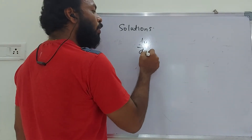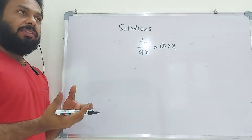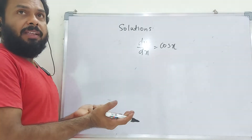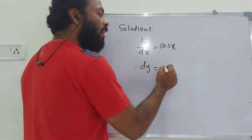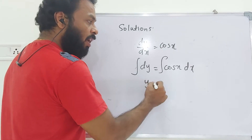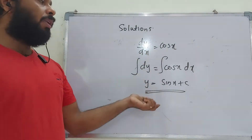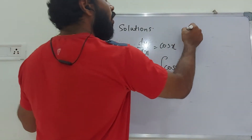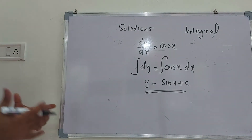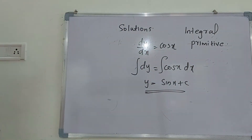Note that differentiation and integration are inverse processes. When solving a differential equation like dy/dx = cos x, we integrate: dy = cos x·dx, so integrating both sides gives y = sin x + c. The solution of a differential equation is therefore also called an integral or a primitive.